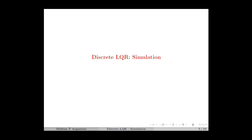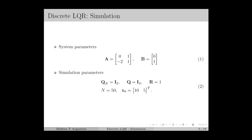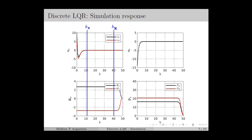Next, we move on to the simulation of discrete LQR, in which we consider a discrete LTI system for which the system parameters are given as in equation number 1. The simulation parameters are chosen as in equation number 2, in which we select the initial state as [10, 5].